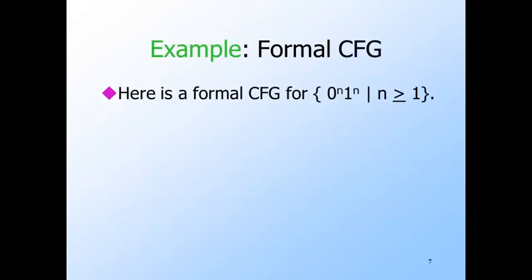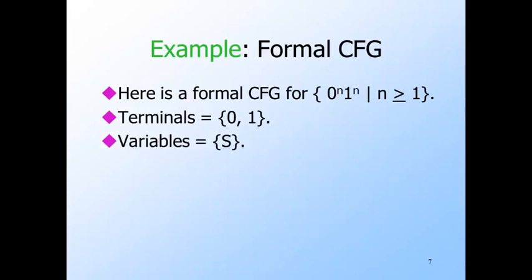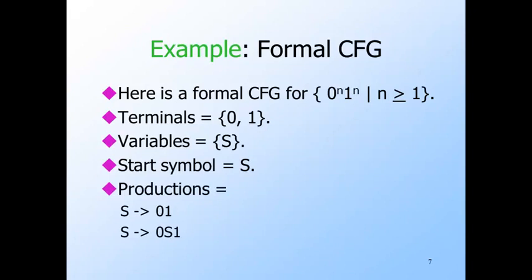We'll design a grammar for the language of strings of the form 0^n 1^n. The terminal alphabet is 0 and 1. We need only one variable, which we'll call S — S will be the start symbol. Here are the productions explained earlier in our informal discussion. The first production generates only the string 01, and the second production puts a 0 and 1 at the beginning and end, respectively, of a shorter string in the language.